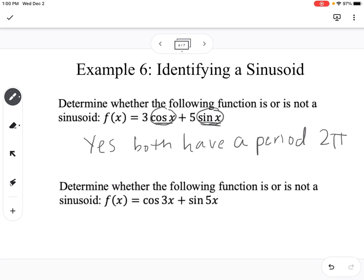But down below here, we have cosine of 3x and sine of 5x. So this one would be no, because cosine of 3x is going to have a period of 2 pi over 3 and sine of 5x is going to have a period of 2 pi over 5. So because those two functions within the sum have different periods, we say it's not a sinusoid.